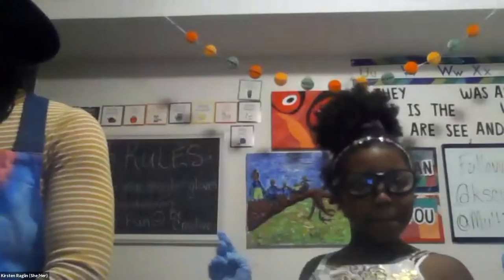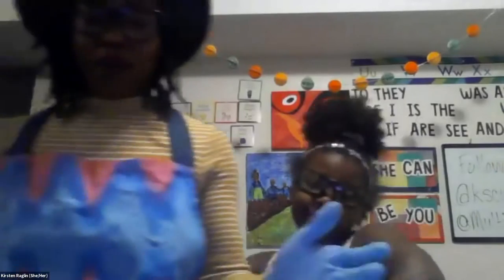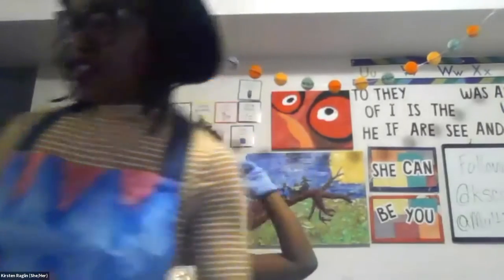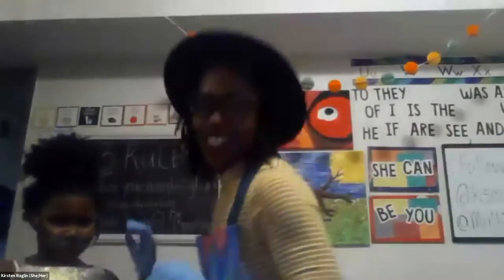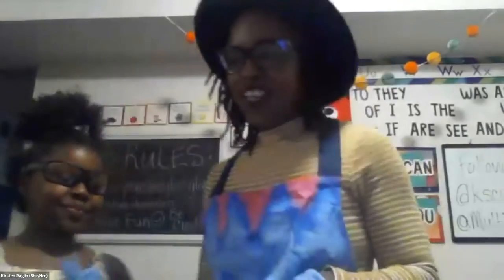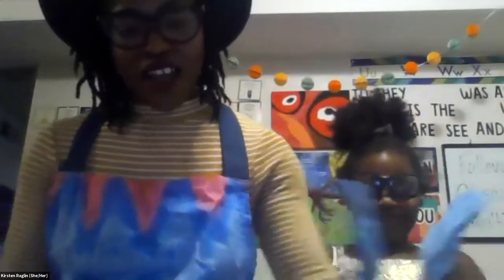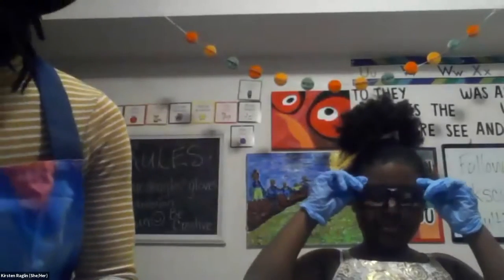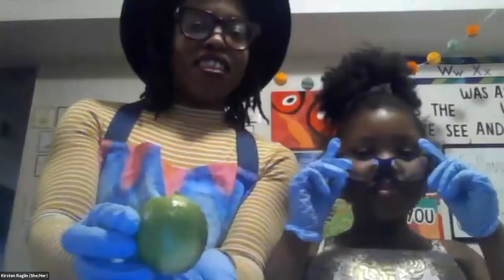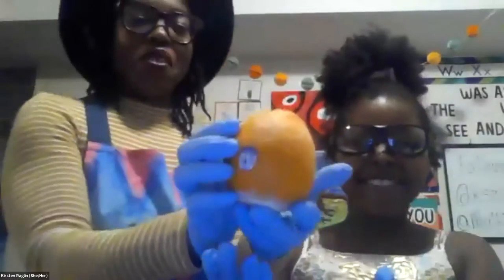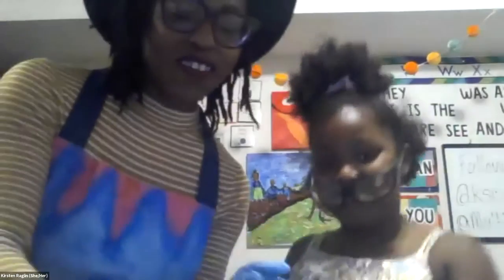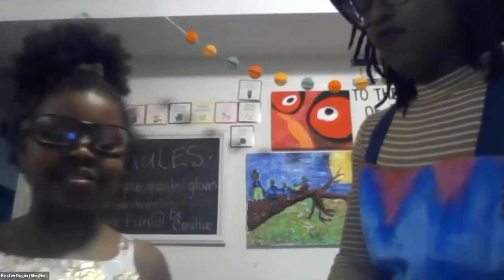Acids and bases are common things you find around the house. Some things you ingest, some things you don't. Always make sure you ask your parent first before ingesting anything. Now we're going to move on to the next experiment using another household item — the lemon. Or if you have one of these, the lime. Or, most commonly found around the house, some oranges. Oranges are also known as a citric acid.